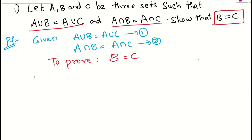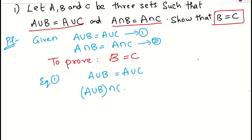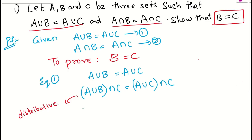First of all, for proving this, let us consider equation number one: A union B is nothing but A union C. What I will do is apply the intersection of C on both sides. So, A union B intersection C is nothing but A union C intersection with C. Now I will apply the distributivity property. If I apply the distributive property, this is nothing but A intersection C union with B intersection C.